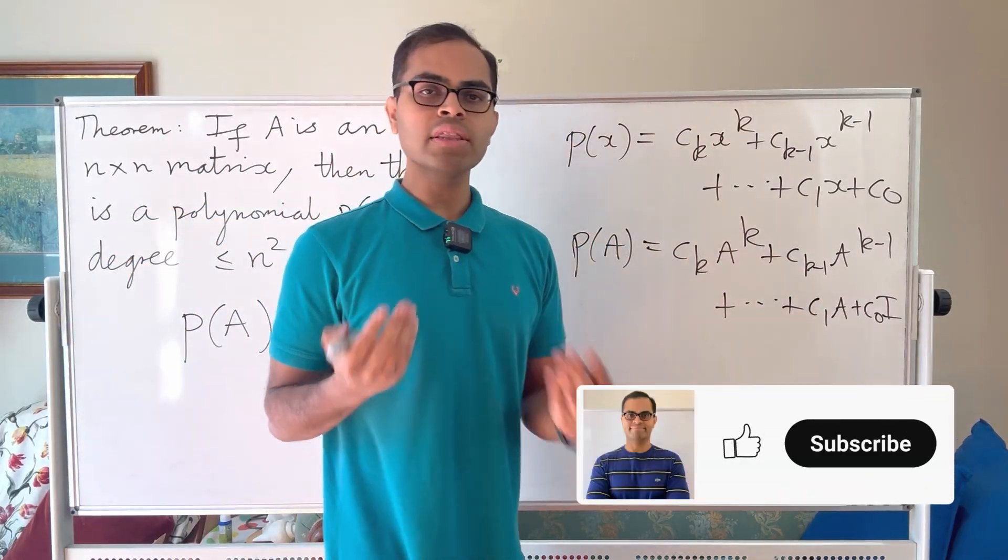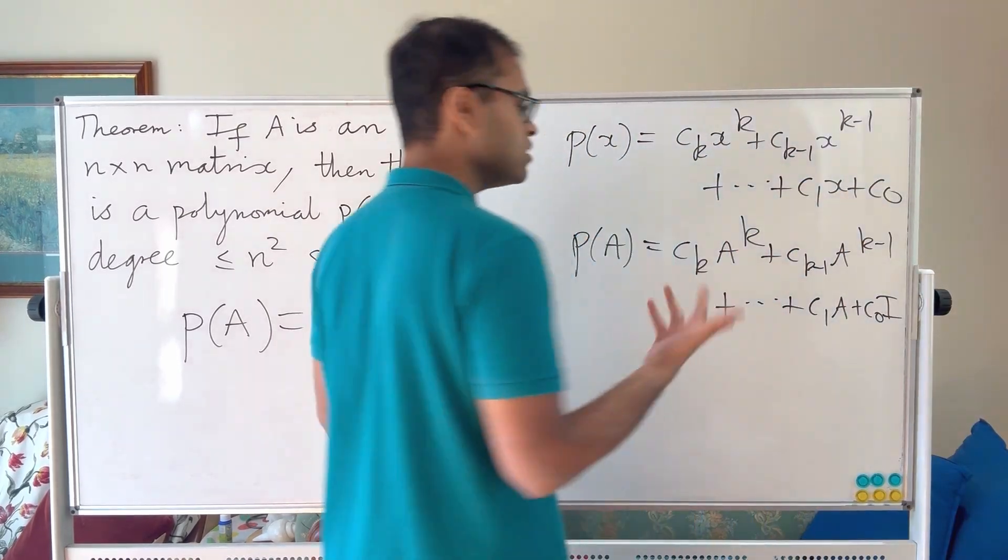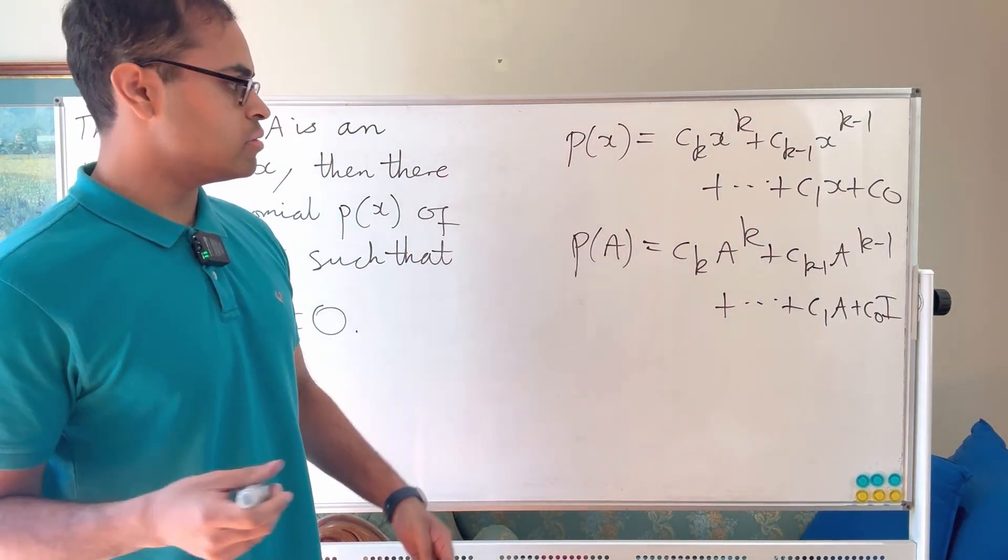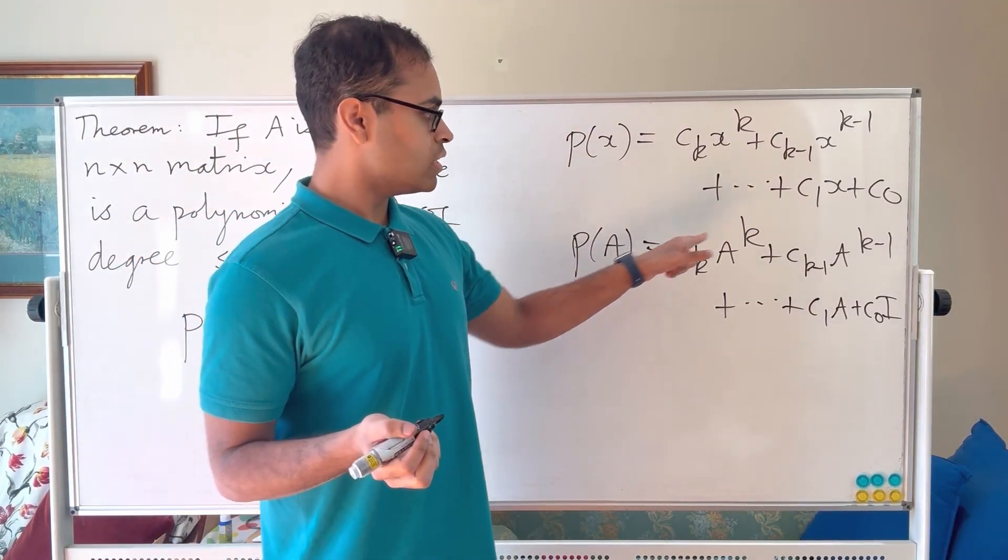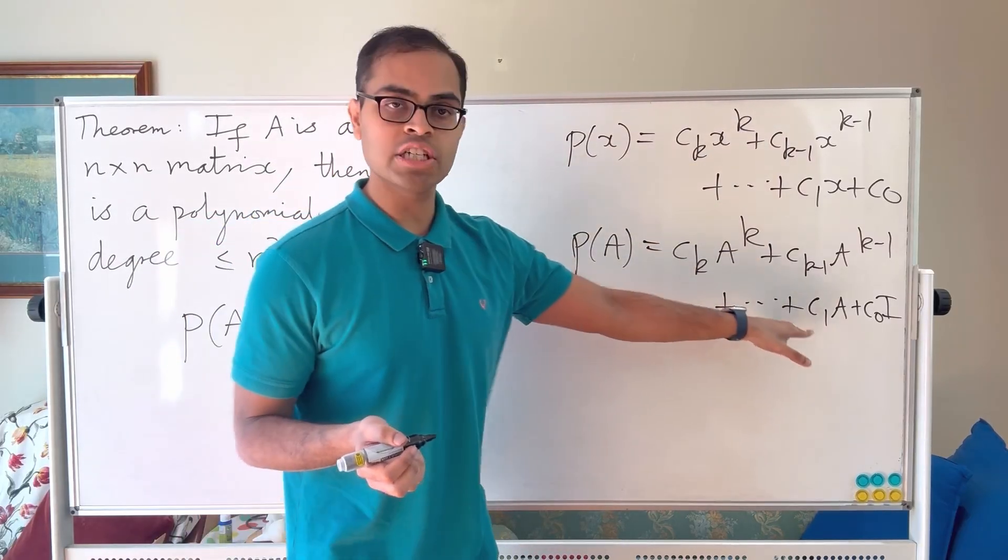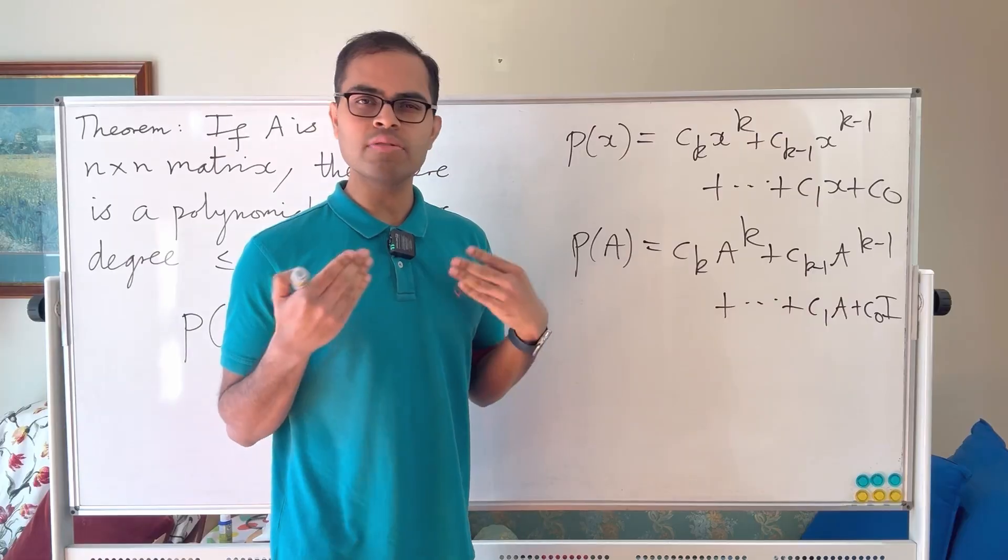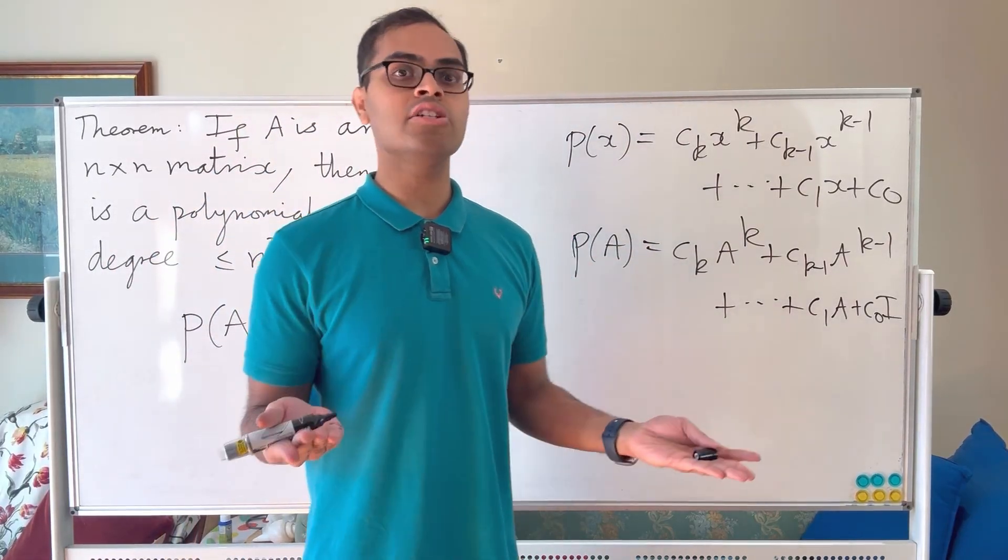But this is the polynomial, and what the theorem is saying is we can find such a polynomial which is also non-zero. So I should say it's also a non-zero polynomial, otherwise any polynomial would do, and its degree is less than or equal to n squared. So how is that true? How are we going to establish that? It's a really beautiful result if you think about it.